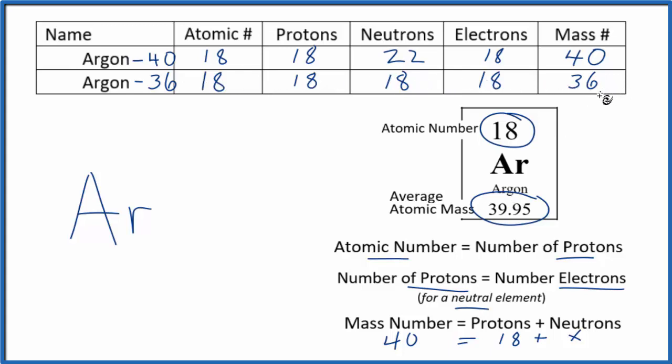If we wanted to write the notation for each of these isotopes, we'd use nuclear notation. We take the mass number and put that up here, and then the number of protons (or the atomic number) would go down here.